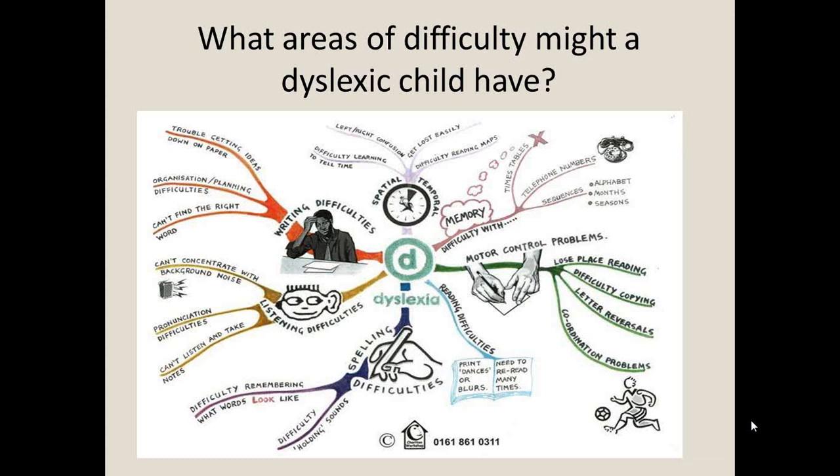The screen shows a mind map drawn to show all the different difficulties a child with dyslexia might have. Even though dyslexia has been around for a long time, there are still a lot of teachers who believe dyslexia is only to do with reading and spelling. This map shows you in more detail all of the difficulties these children might have — particularly in secondary school, they may have difficulty with organisation.